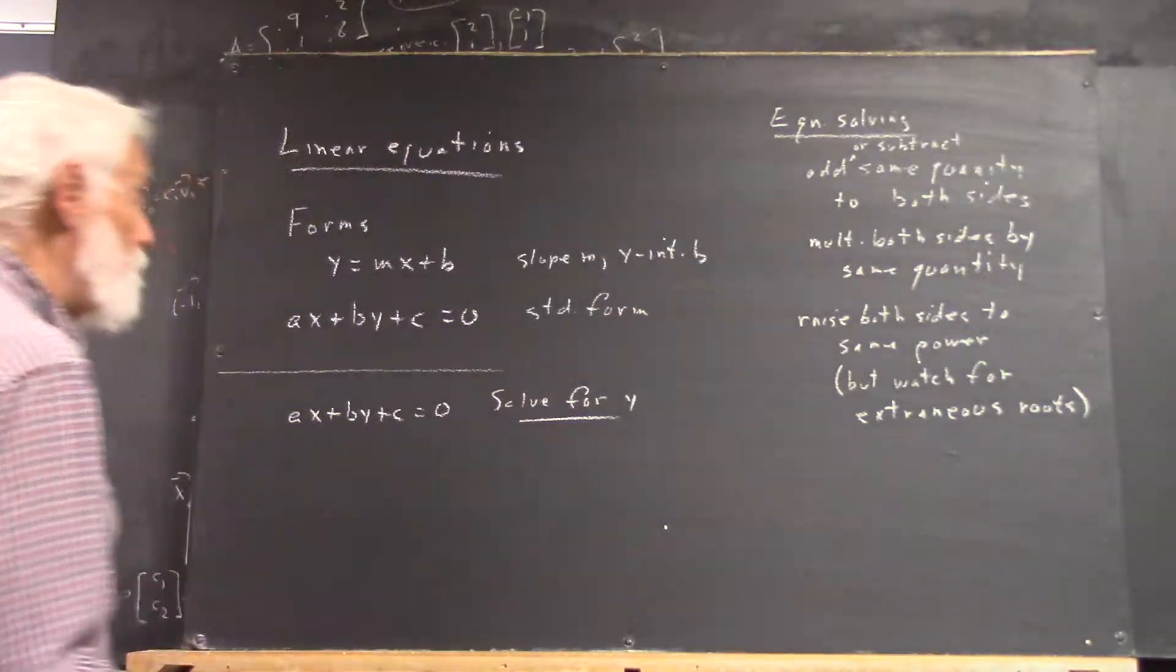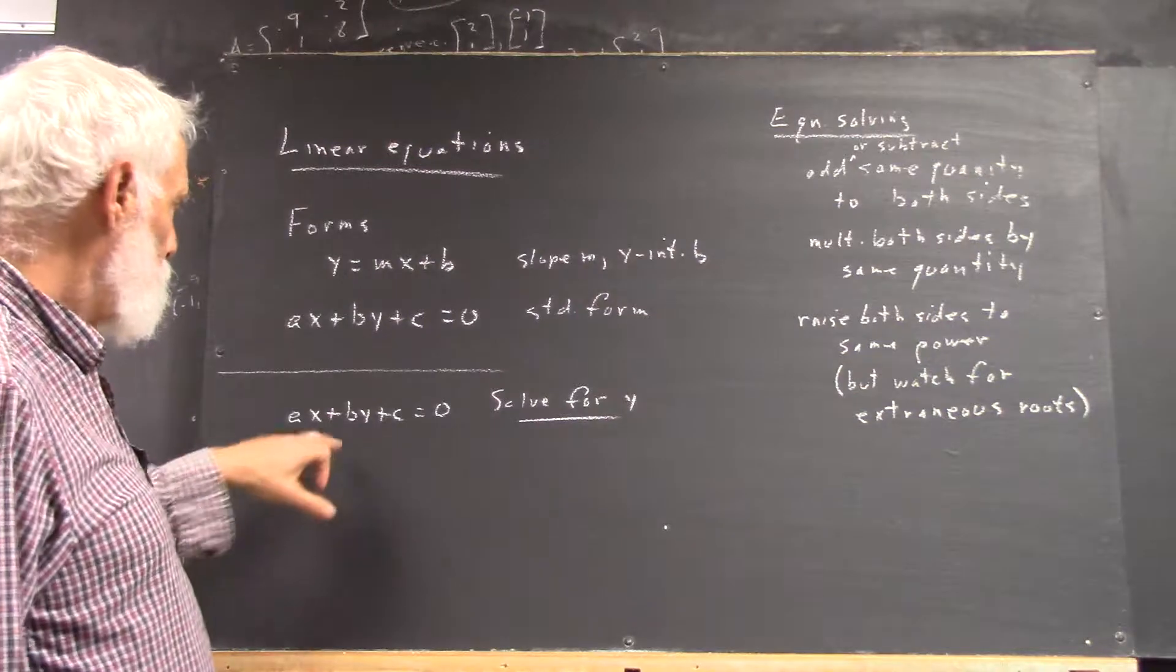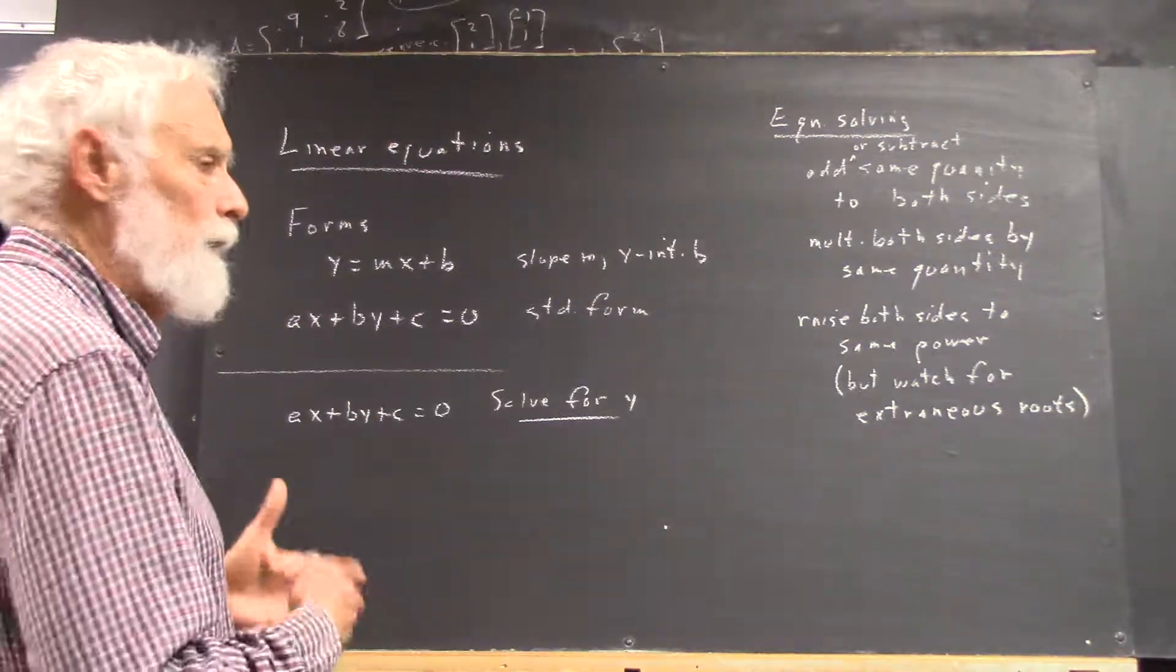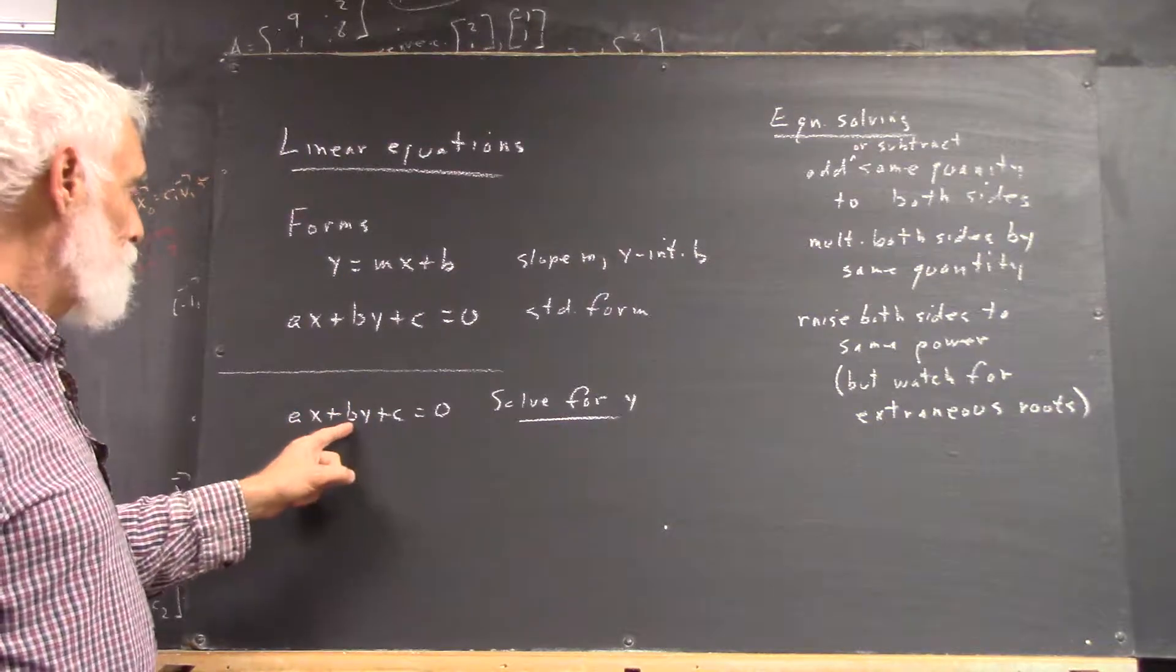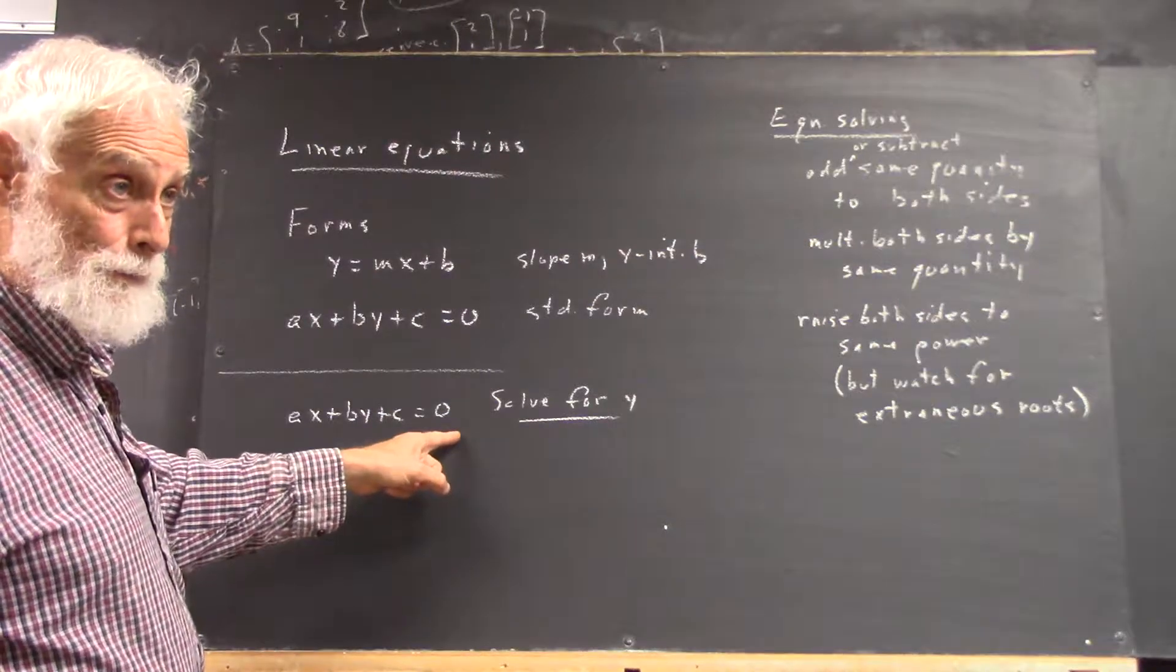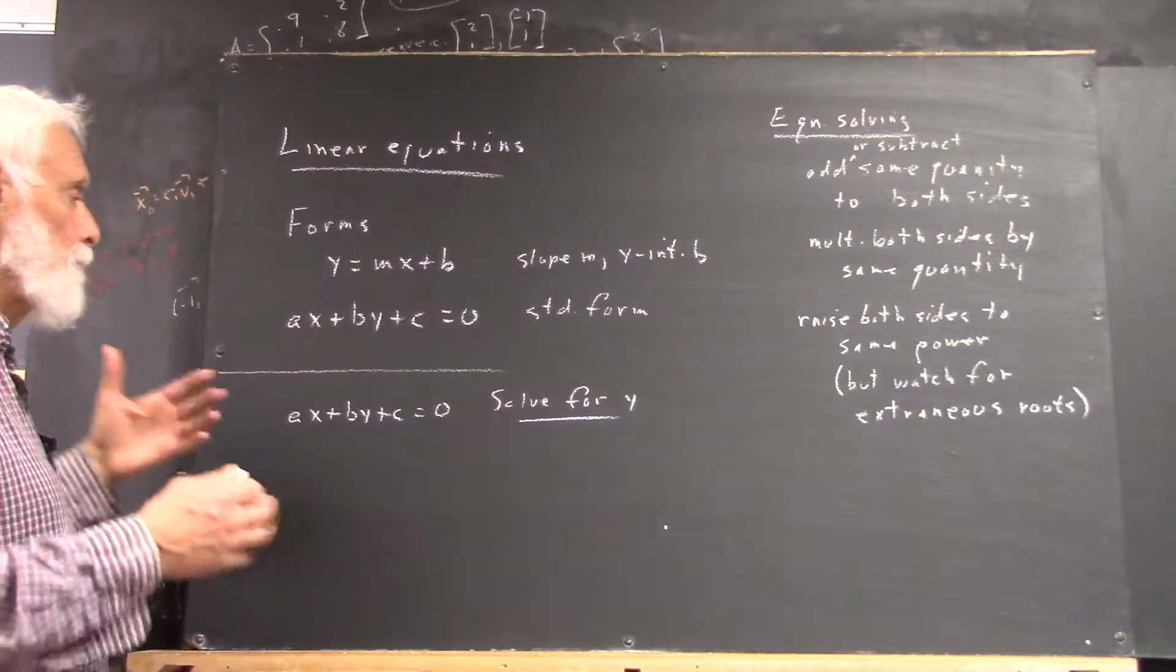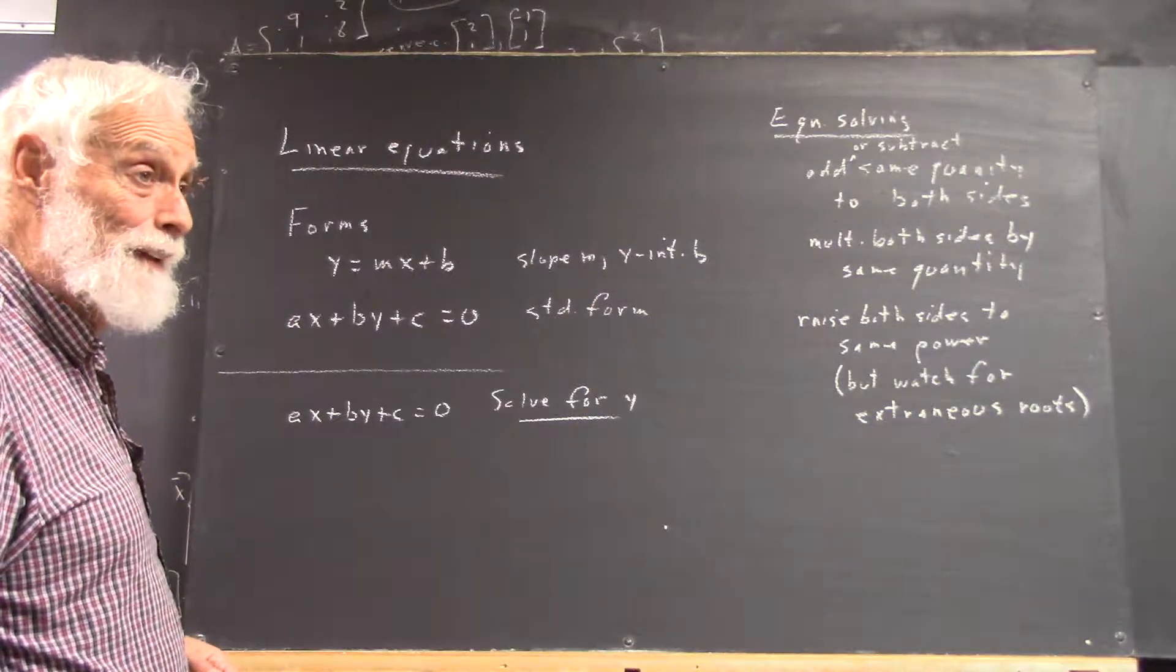So, solve this equation for Y. What's the first thing you want to do? Well, you want to move something to the other side. Now, the first thing somebody said was, well, you want to divide by B. Eventually you do. But that would involve a division. You do subtractions and additions first. It's kind of like order of operations. And there are good reasons for that. If you divide everything by B, then you've got to divide this by B, this by B, and this by B. And, of course, zero by B. That would give you zero. Well, that's not an illegal operation. It's just more complicated than what you would do if you add the same thing to both sides. So, what would you add or subtract on both sides to get rid of something else? What do you want to get rid of? Just one term. C.